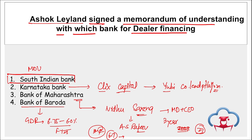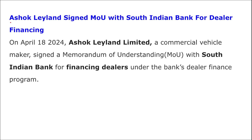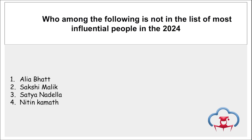Bank of Baroda introduced four new saving accounts: BOB Lite, BOB Bro, My Family My Bank, and Baroda NRI. Ashok Leyland signed an MOU with South Indian Bank for dealer financing.